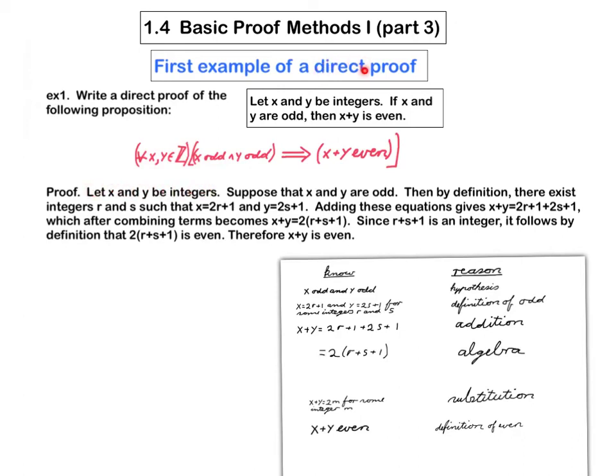this thing here determines that the first sentence of the proof should be let x and y be integers. Since we're giving a direct proof of this conditional statement, this dictates that the second sentence of the proof should be suppose that x and y are odd. Now we go to the table for the intermediate steps. But notice that most of the things on the table are just written in symbols.